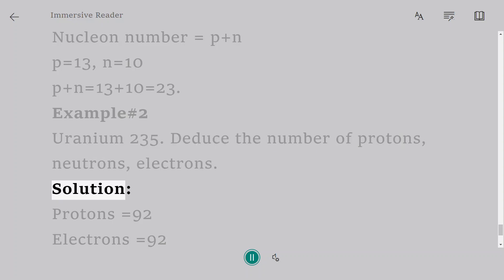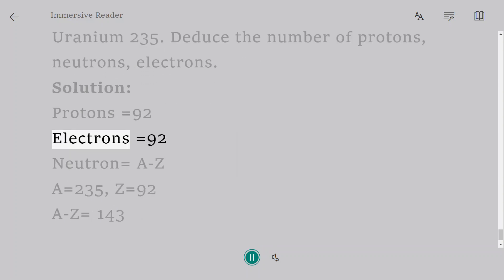Solution: Protons equals 92. Electrons equals 92. Neutrons equals A minus Z. A equals 235, Z equals 92. A minus Z equals 143.